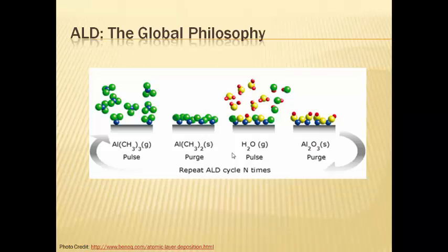The entire ALD process can be summarized in this diagram. The repeated sequential pulsing and purging of different precursors lead to formation of the thin film with precisely controlled thickness of the material to be deposited.